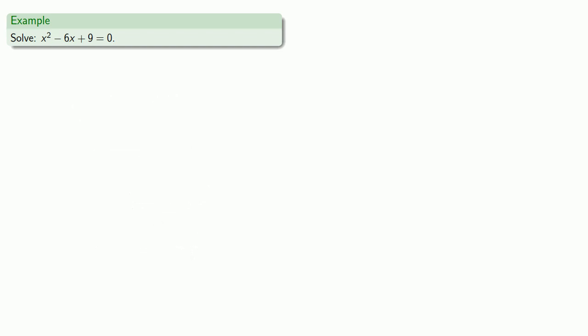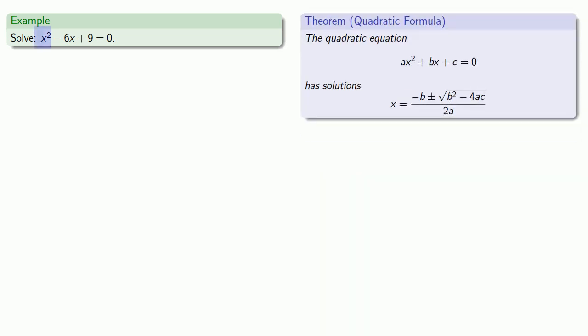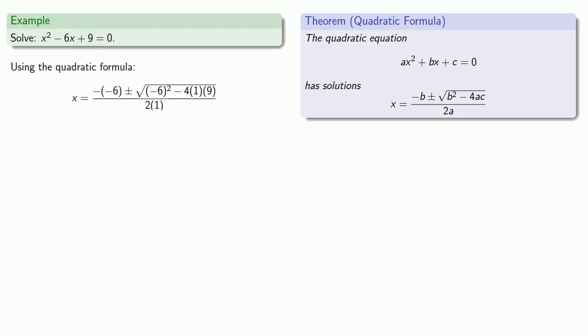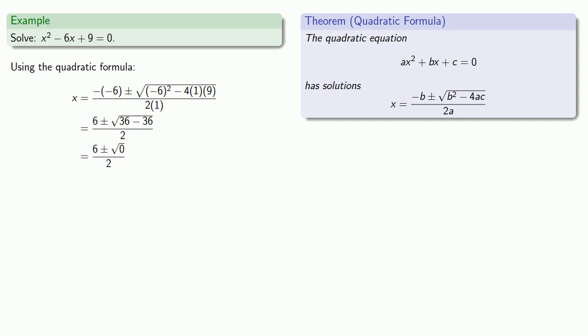Let's do another one. How about x squared minus 6x plus 9 equals 0? We'll pull in the quadratic formula. a equals 1, b equals negative 6, c equals 9. We drop those in, simplify, and split our fraction into two fractions, getting x equals 3 or x equals 3. An ordinary person would say this equation has one solution, x equals 3. But a mathematician is not an ordinary person — we say this equation has two solutions that just happen to be the same. And there is a good reason for saying that.